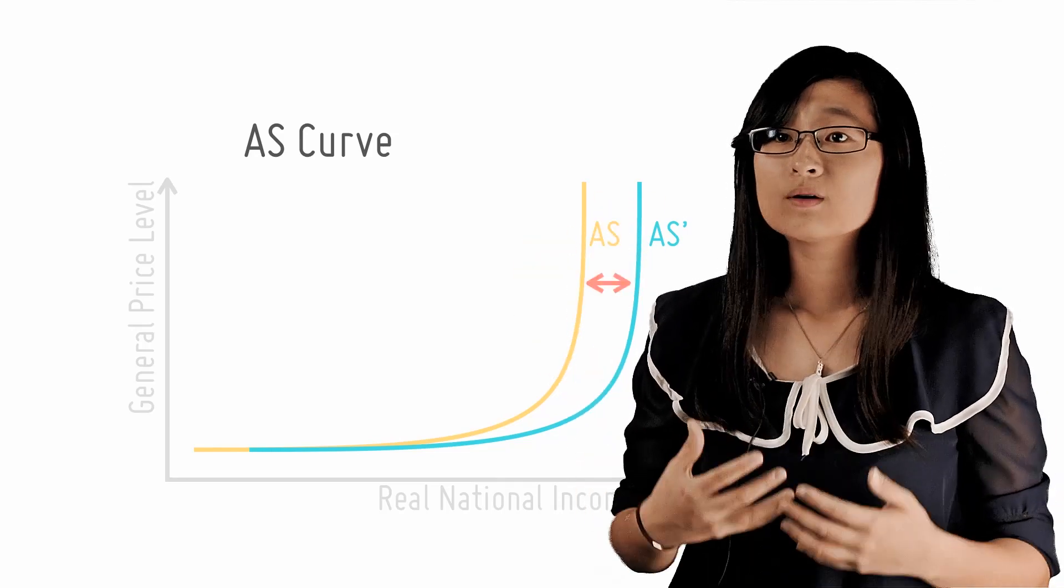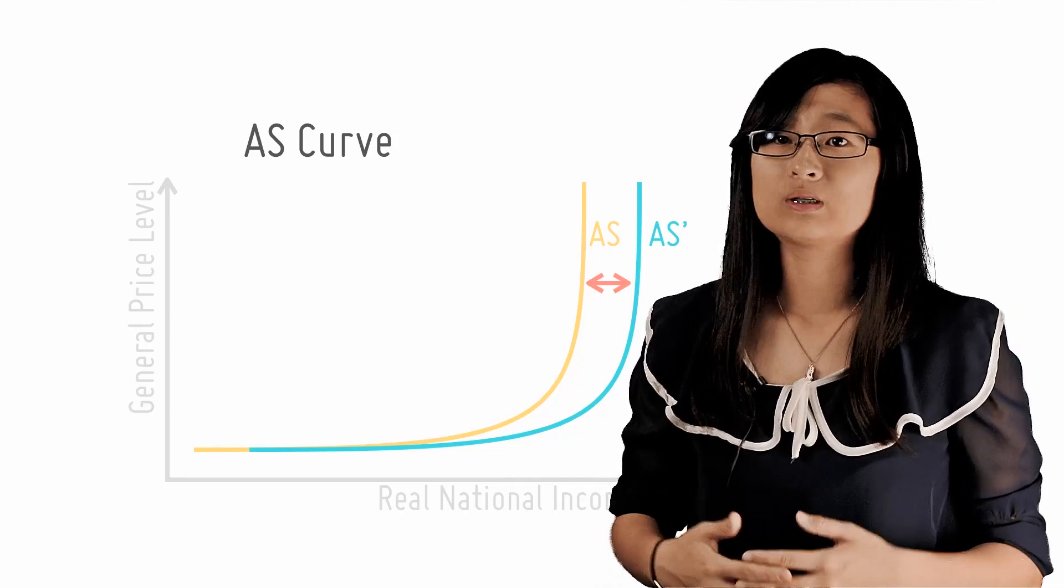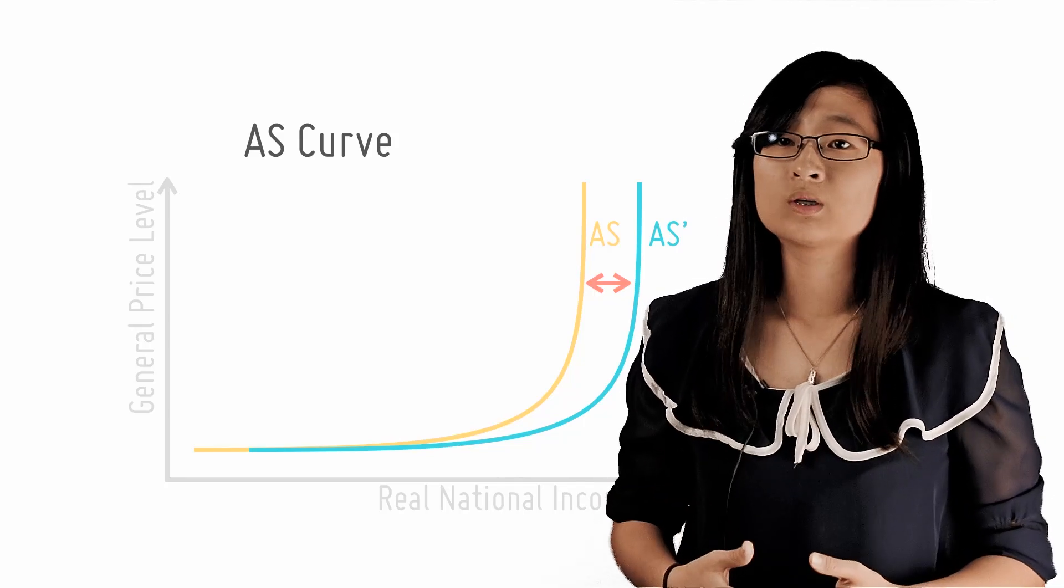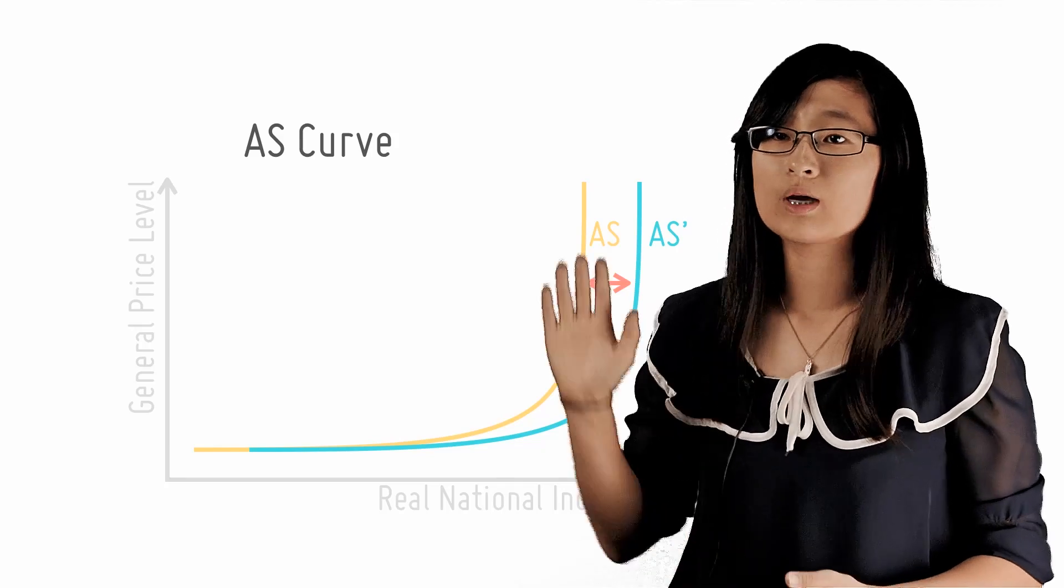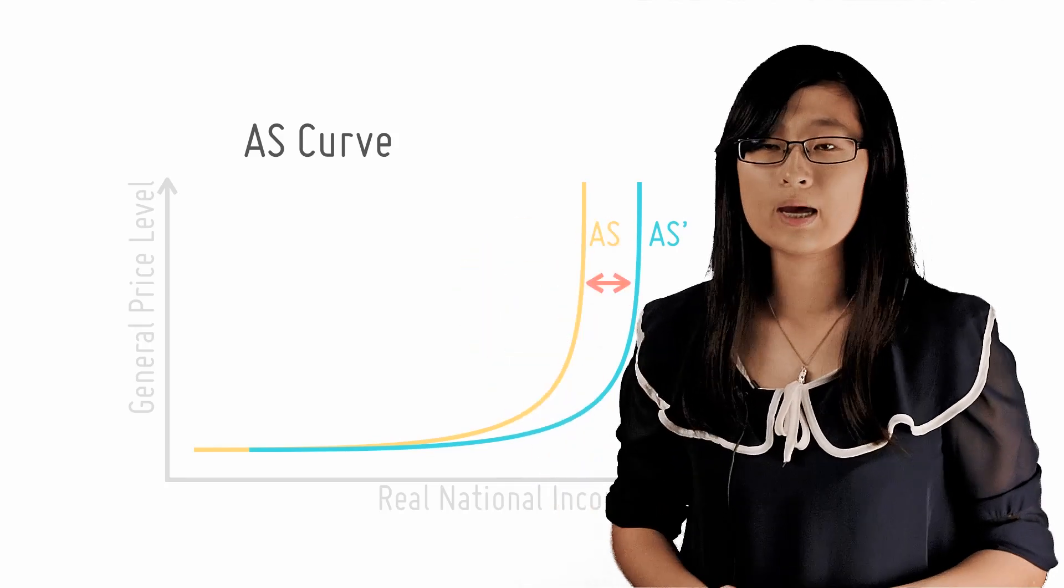If a massive natural disaster destroys a nation's factories then the greatest quantity of goods and services it can produce will fall, resulting in a leftward shift in the AS.